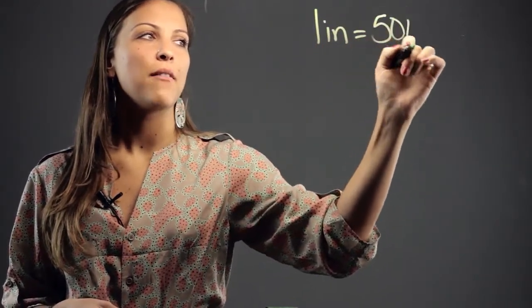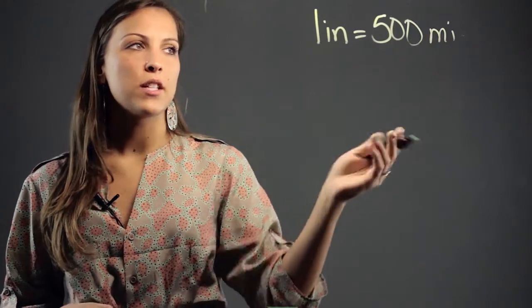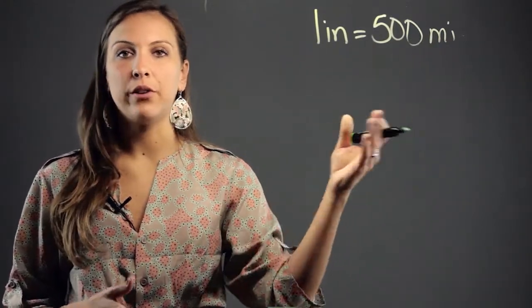So you might see, for example, on a map that one inch equals 500 miles. So this means that one inch on the map is equivalent to 500 miles in real life.